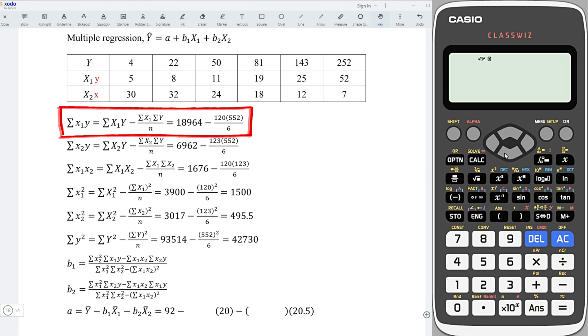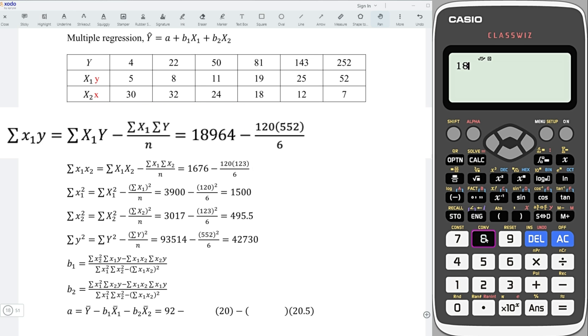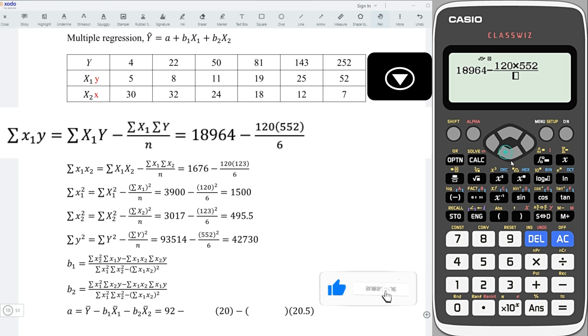For the first sum of squares, we have 18,964, minus, press on the fraction key. We need 120, multiply, 552, and down, divided by 6. Press on equal, and we obtain the value.